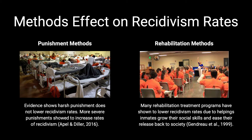Now we'll look at each method's effects on recidivism rates. The main punishment method used is incarceration, which separates criminals from their home community. Evidence shows that punishment does not lower recidivism and does not have an effect on deterrence. Research also shows that harsher conditions, such as higher security levels, and longer sentences have shown higher rates of recidivism. On the other hand, rehabilitation techniques have shown to lower recidivism rates since they intend to improve inmates' mental, emotional, and social well-being. Overall, there is increasing research and evidence proving that prisons emphasizing rehabilitation programs reduce recidivism rates among offenders.